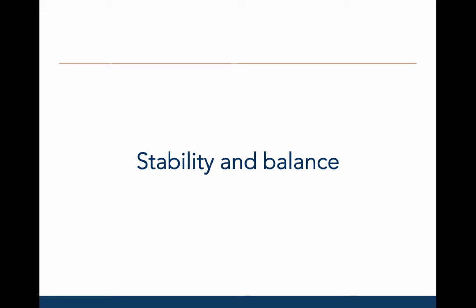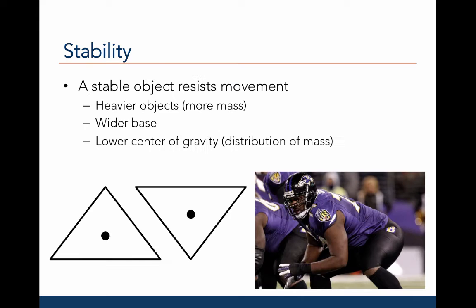Now let's talk about the biomechanical principles of stability and balance. A stable object resists movement. Stable objects are typically heavier objects, meaning that they have more mass, have a wider base of support, and have a lower center of gravity, or distribution of mass.